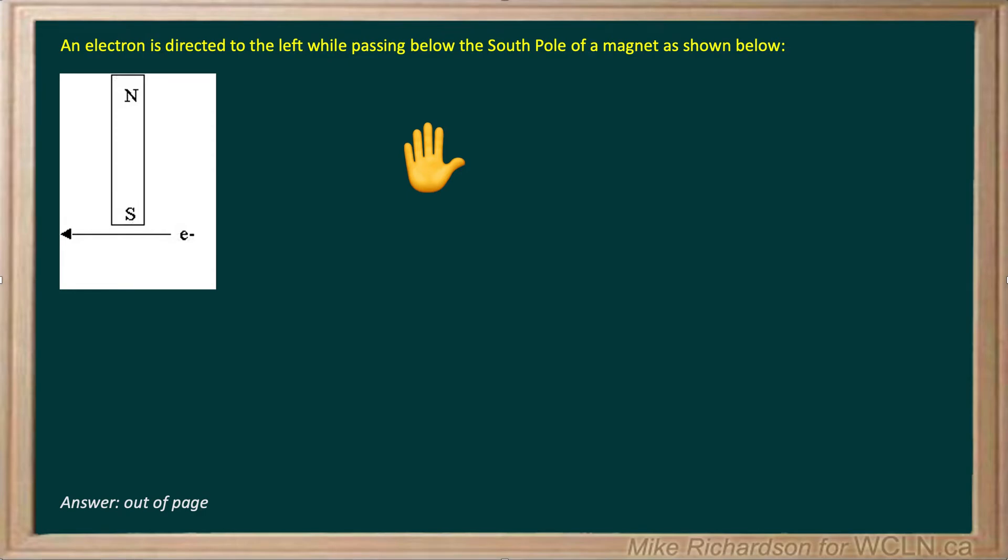An electron is directed to the left, so you've got some little electron here with a velocity to the left, and it's passing below the south pole of a bar magnet as shown.